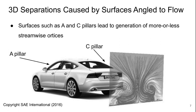3D separations on the other hand are caused by surfaces that are angled relative to the flow. These are things like the A and C pillars on a typical car. These lead to the generation of more or less streamwise vortices. This shows a flow pattern downstream where you can see those vortices from the C pillars persisting some distance downstream of the vehicle.